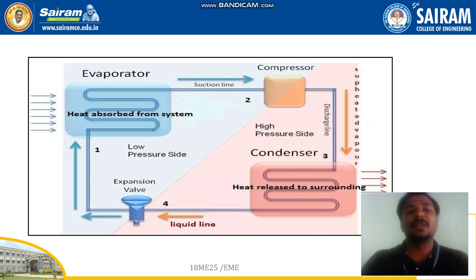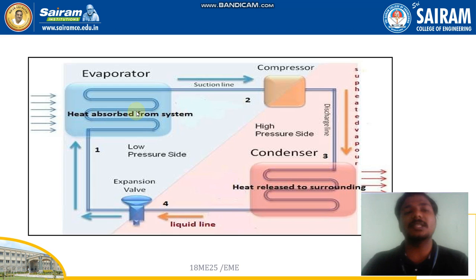When the evaporator starts absorbing heat from the items placed inside — whether foodstuff, fruits, vegetables, or anything — that liquid refrigerant undergoes a phase change from liquid to vapor. The heat content present inside the refrigeration cabin is absorbed by the evaporator, and because of this absorbed heat the liquid changes to vapor.